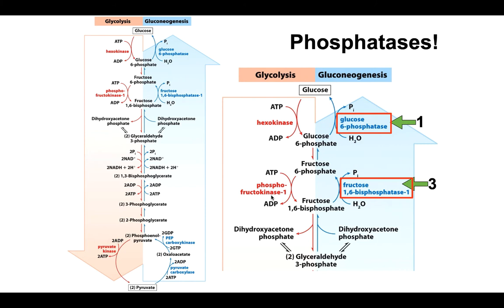The reaction catalyzed by phosphofructokinase 1 in glycolysis is bypassed by fructose 1,6-bisphosphatase, which clips off that phosphate group in the reverse direction. And hexokinase, which phosphorylates glucose to glucose 6-phosphate in glycolysis, is bypassed by glucose 6-phosphatase, which simply clips off that phosphate group without adding it to anything else. So in this respect, gluconeogenesis is pretty simple — just a couple of phosphatases that bypass the two kinases at steps 1 and 3 of glycolysis.